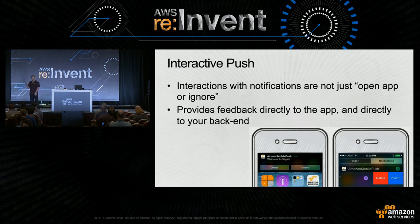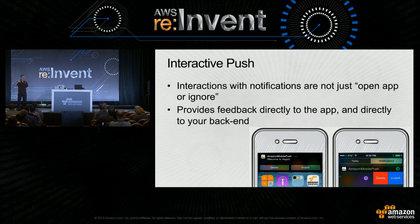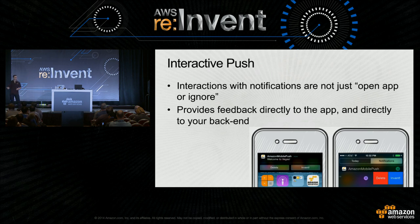Here's an example of interactive push. With the new iOS 8 interactive push capabilities, you can control what happens on the notification screen. For instance, 'Welcome to Las Vegas — click the Invent button.' You can custom-create an action tied to that button, specific to the application. It gives feedback into your application, which you might feed back into your own backend API or push back into Kinesis.